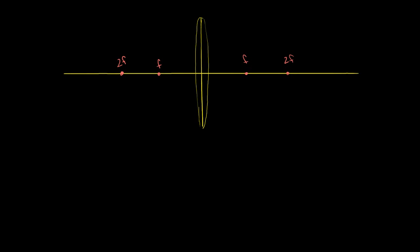Like we did with parabolic mirrors, what I really want to do in this video is put objects at different distances relative to this convex lens and think about what its image will look like. The whole point is to go through all of the different situations and get practice in how to think about it.